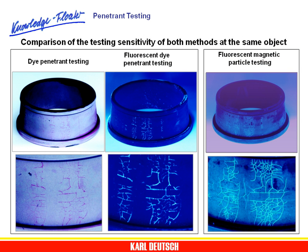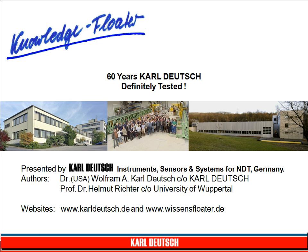To conclude, here once again is a comparison of the results of the two methods for a roller bearing carrying many surface cracks. On the left, penetrant testing using red dye. In the middle, a penetrant testing procedure using a fluorescent dye evaluated under ultraviolet light. On the right, the results of magnetic particle testing.